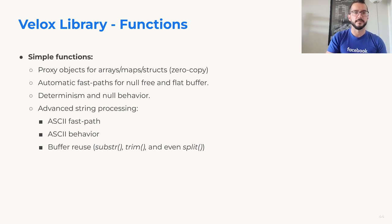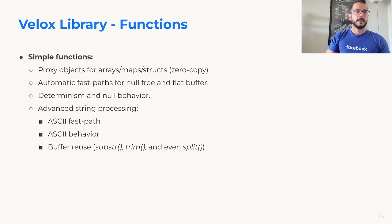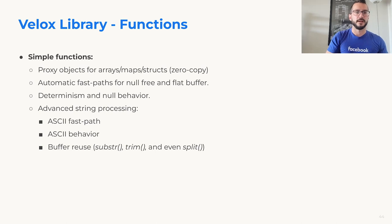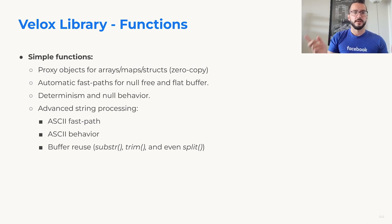We also have advanced string processing features like ASCII fast path: when defining a string function, you can specify one generic path and one path that assumes only ASCII characters. Functions can also control ASCII propagation behavior — if a function always produces ASCII outputs given ASCII inputs, that allows Velox to skip the ASCII detection code. Users implementing functions over strings can also specify buffer reuse, so for things like substring and trim, you can implement them without copying string contents by just playing with the pointers.